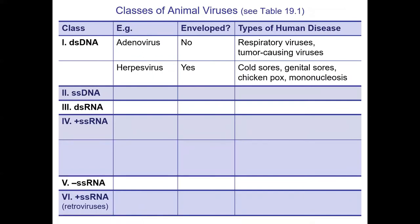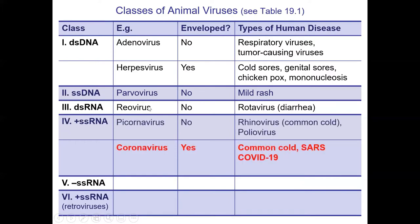Here are some examples of different viruses - you don't need to know them for the class, just showing that there's a whole variety. We talked about herpes viruses - these are enveloped double-stranded DNA viruses. Some adenoviruses cause cold-like symptoms. There's also single-stranded DNA parvovirus, double-stranded RNA rotavirus that causes diarrhea in children, and plus-stranded RNA viruses are a huge group - including the SARS coronavirus, of which there are a few now known.